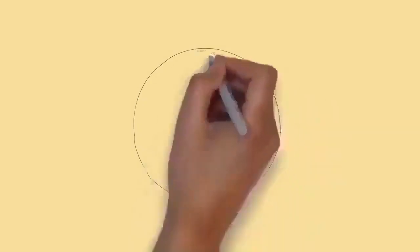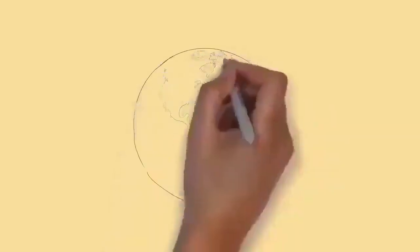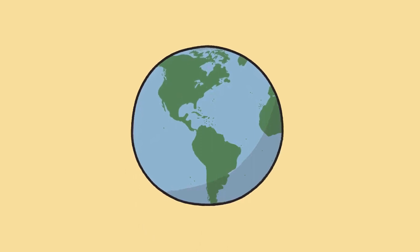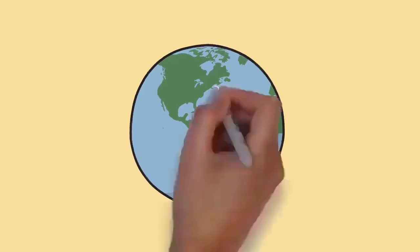A brain is an organ that serves as the center of the nervous system in all vertebrate and most invertebrate animals. It is located in the head, usually close to the sensory organs for senses such as vision.